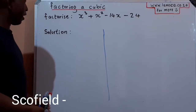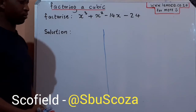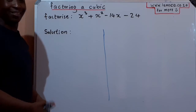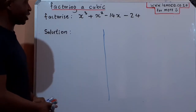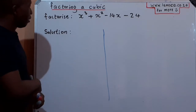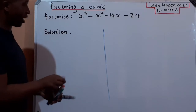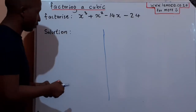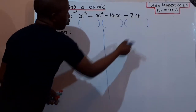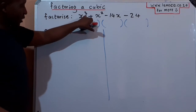In this video we're going to learn how to factorize a cubic expression using the long division method. Long division is probably one of the most complicated factorization techniques. When we factorize a cubic, we are expecting to get three factors — the first factor, the second factor, and the third factor — because this is a cubic.